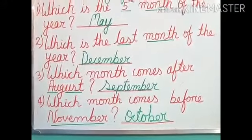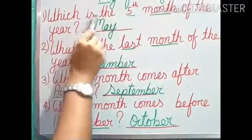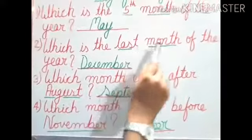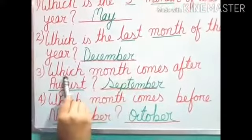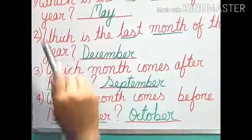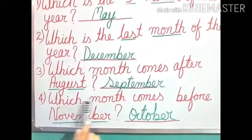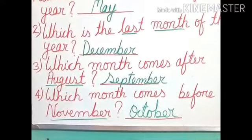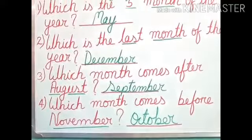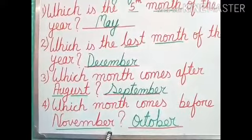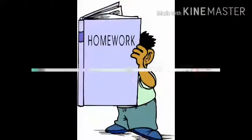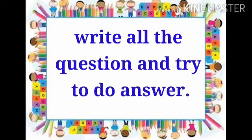Let us review from number 1: Which is the fifth month of the year? May. Which is the last month of the year? December. Which month comes after August? We count and get September. Which month comes before November? We count and get October. You will copy all the questions in your maths copy and try to do the answers by yourself.